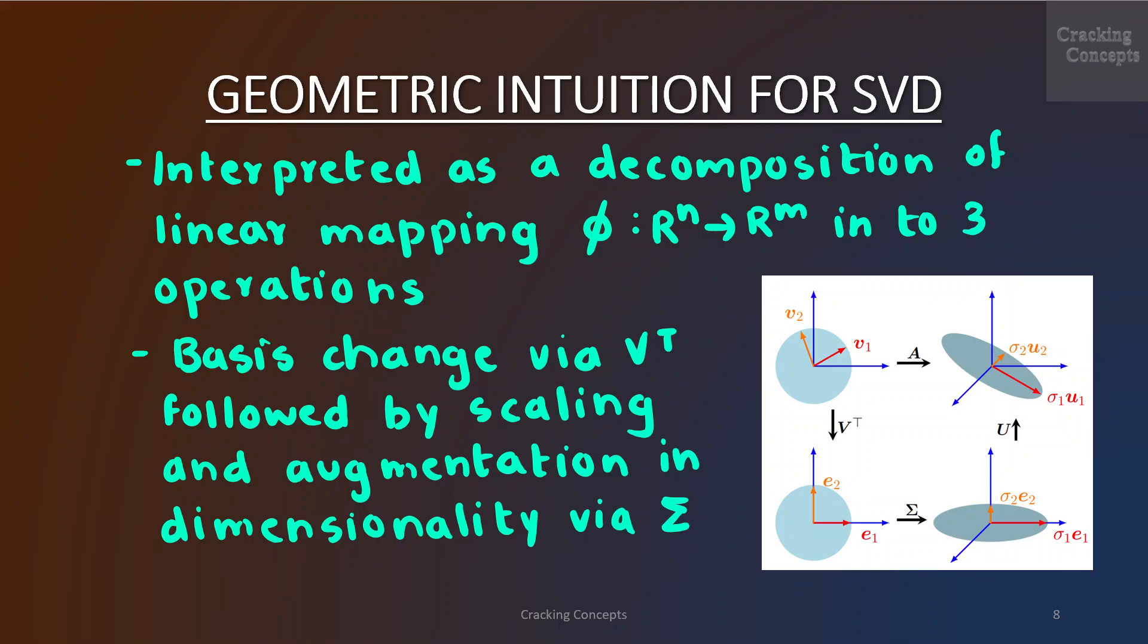SVD of a matrix can be interpreted as a decomposition of a corresponding linear mapping φ from the n-dimensional vector space to the m-dimensional vector space into three operations.